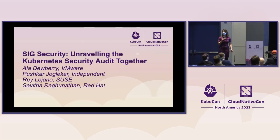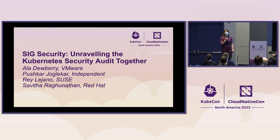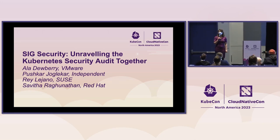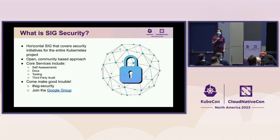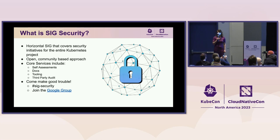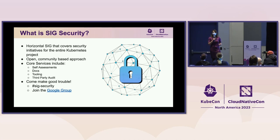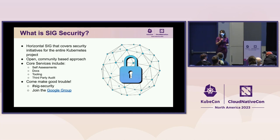How about Kubernetes and security? My name is Allah Dewberry, and I have the pleasure of talking about SIG Security with my colleagues Pushkar, Savitha, and Ray today. SIG Security is a horizontal non-coding SIG that drives security initiatives for the entire Kubernetes project — checking in with other SIGs, making sure core components are secure, doing vulnerability management, in addition to the four subprojects you'll be hearing about today. What really makes us stand out is our very open and community-driven approach.